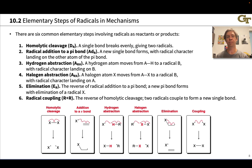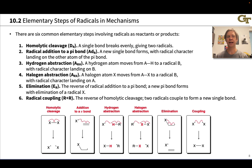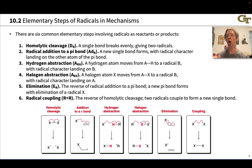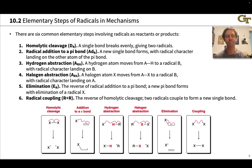There's radical addition to a pi bond, hydrogen abstraction — which is kind of like radical addition to an RH bond, abbreviated as ARH, abstraction of an RH hydrogen. There's halogen abstraction, abstraction of an RX halogen, very similar to hydrogen abstraction, just a different atom type.